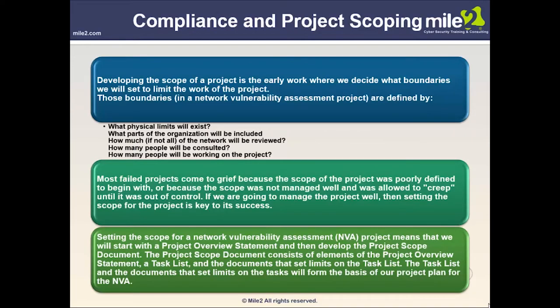Compliance and project scoping: developing the scope of a project is early work where we decide what boundaries will limit the project. In network vulnerability assessment, boundaries are defined by physical limits, which parts of the organization are included, how much of the network will be reviewed, how many people will be consulted, and how many will work on the project. Most failed projects come to grief because the scope was poorly defined or not managed well and allowed to creep out of control.